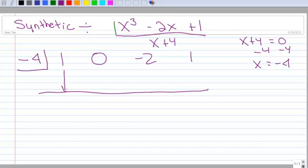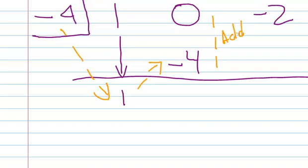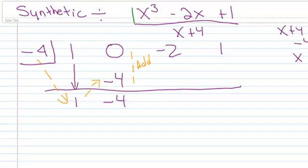And then the first thing we do is bring down that first term. Now we start our process. And I'm going to kind of do an orange dotted line here to show you how it goes. So negative 4 times 1 is negative 4, and then I write that right here. And then I'm going to add this column up. So 0 plus negative 4 is negative 4, and then I do it again.